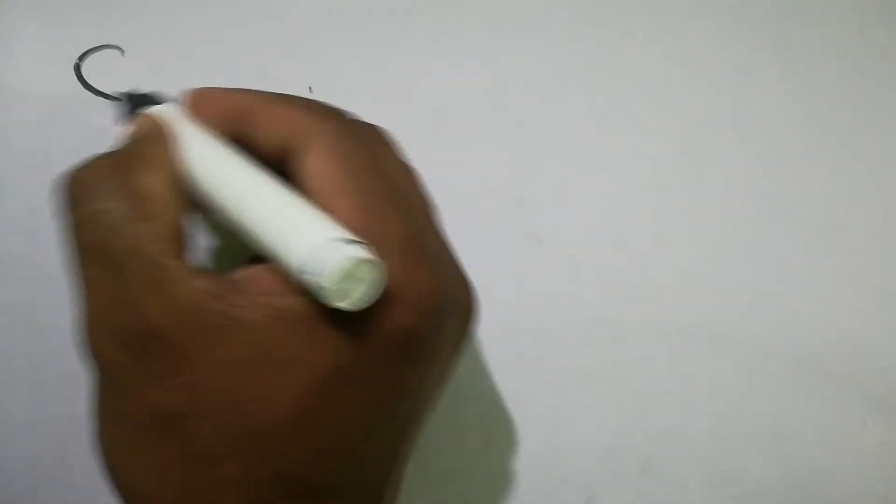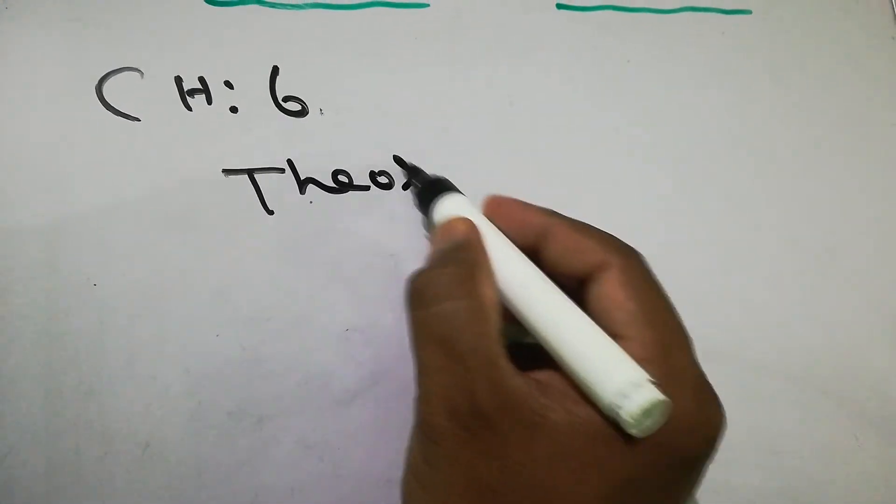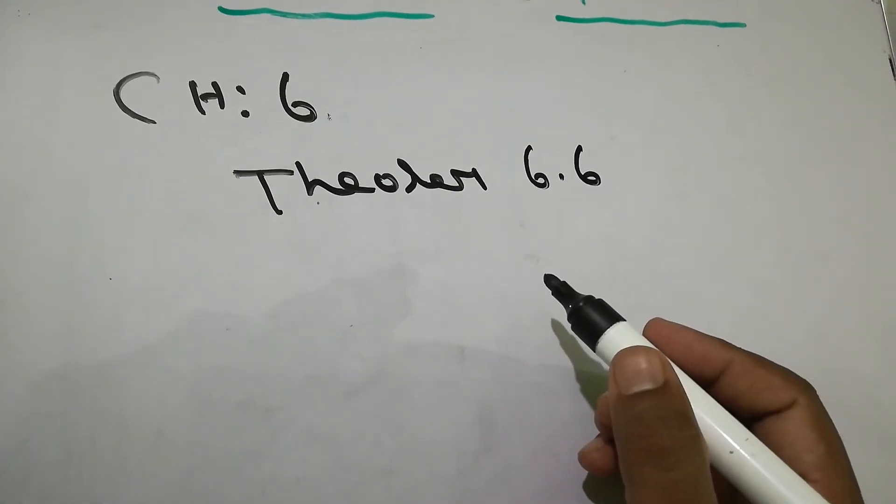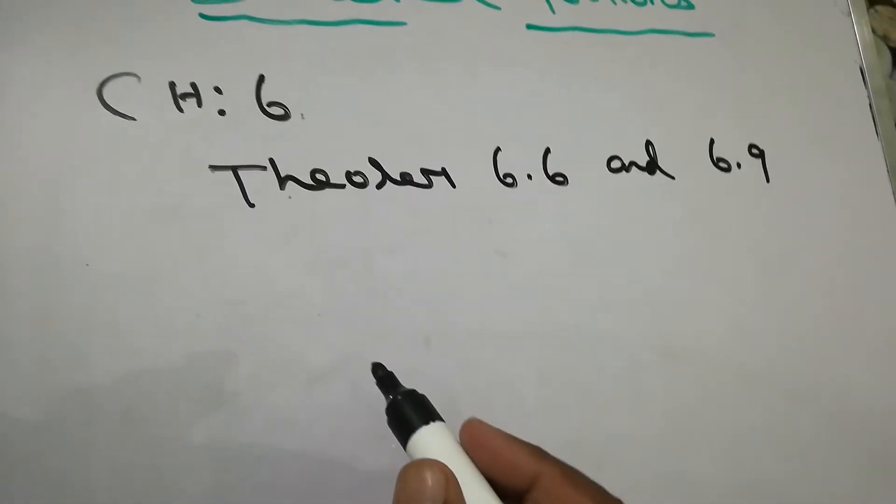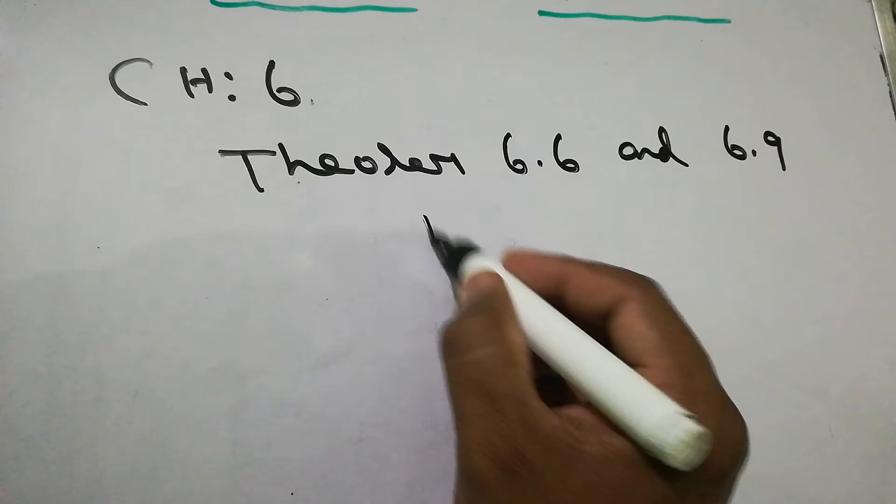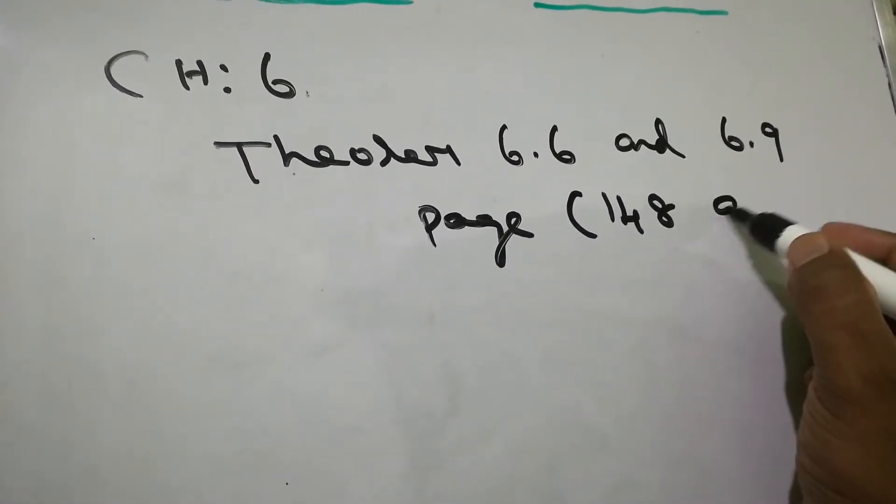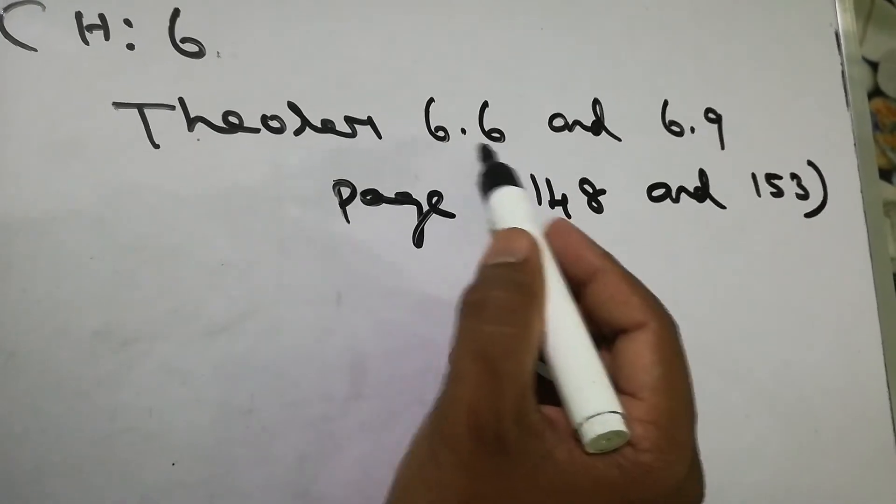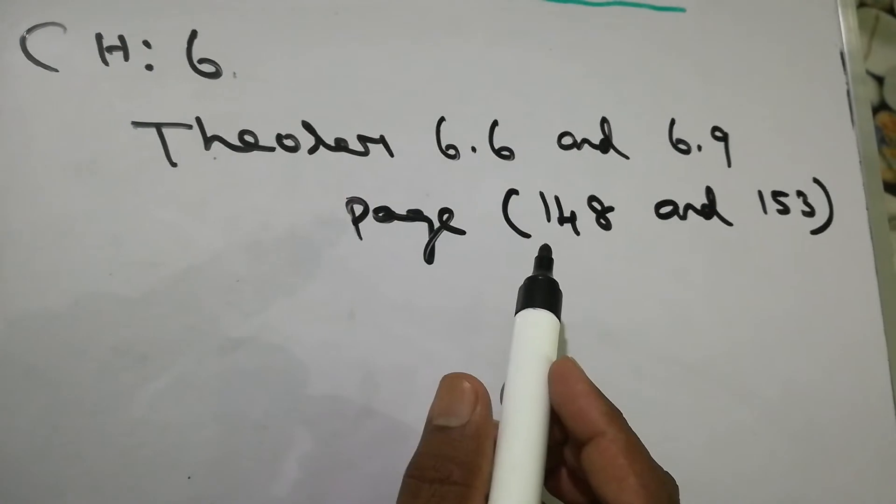And Chapter 6 again, theorem 6.6 and theorem 6.9, these two theorems deleted. So the page number, page number 148 and 153. So 148 is theorem 6.6 and 153, theorem 6.9, these theorems also deleted.